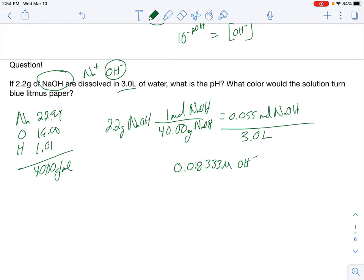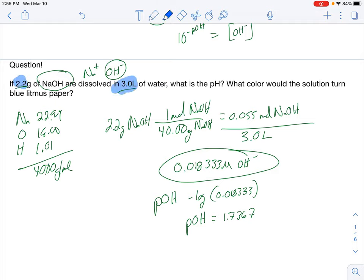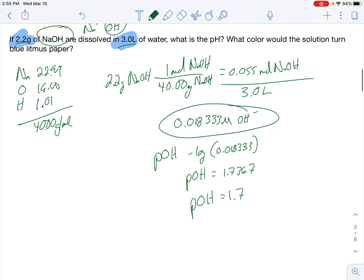Now, I'm going to calculate pOH first because I have hydroxide ions. pOH is the negative log of my concentration, 0.018333. And I plug that into my calculator. I get my pOH is 1.7367. With sig figs, what does that come out to be? Because now I should round as I'm going to be changing my function. I have two sig figs, two sig figs, all right? Two sig figs, two sig figs. So my pOH is 1.7.